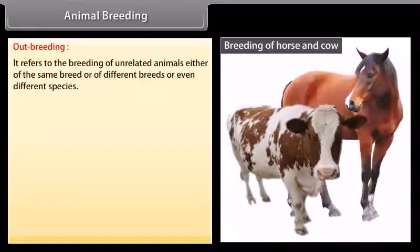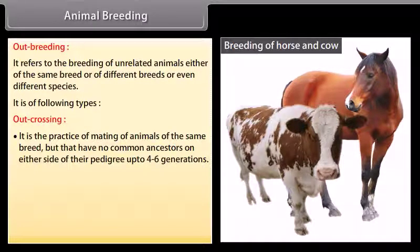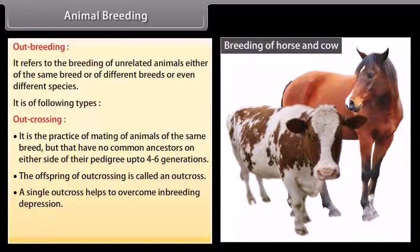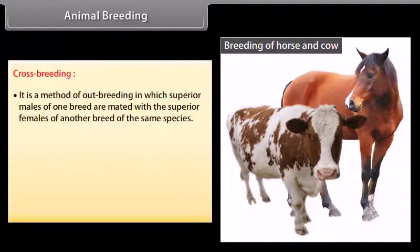Outbreeding refers to the breeding of unrelated animals, either of the same breed, different breeds, or even different species. It is of the following types. Outcrossing is the practice of mating animals of the same breed that have no common ancestors on either side of their pedigree up to 4 to 6 generations. The offspring is called an outcross. A single outcross helps to overcome inbreeding depression and is the best breeding method for animals that are below average in productivity and growth rate.